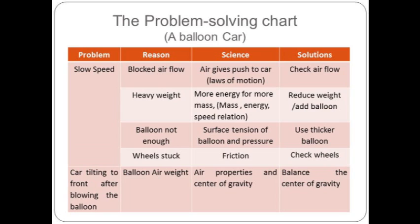There can be various other reasons behind the car not running or other problems, leading children to understand still other science concepts. Sometimes the car tilts in the front after blowing the balloon, which is due to the weight of the air, helping the child learn about this air property and about the center of gravity, which then guides working on solutions. Thus a single toy can cover many concepts otherwise taught in separate lessons throughout the year that are disconnected from each other. A tool of writing down problems in a chart can become more useful when making complex models, systematizing the process and giving the child a framework for thinking while reflecting on the learning taking place.